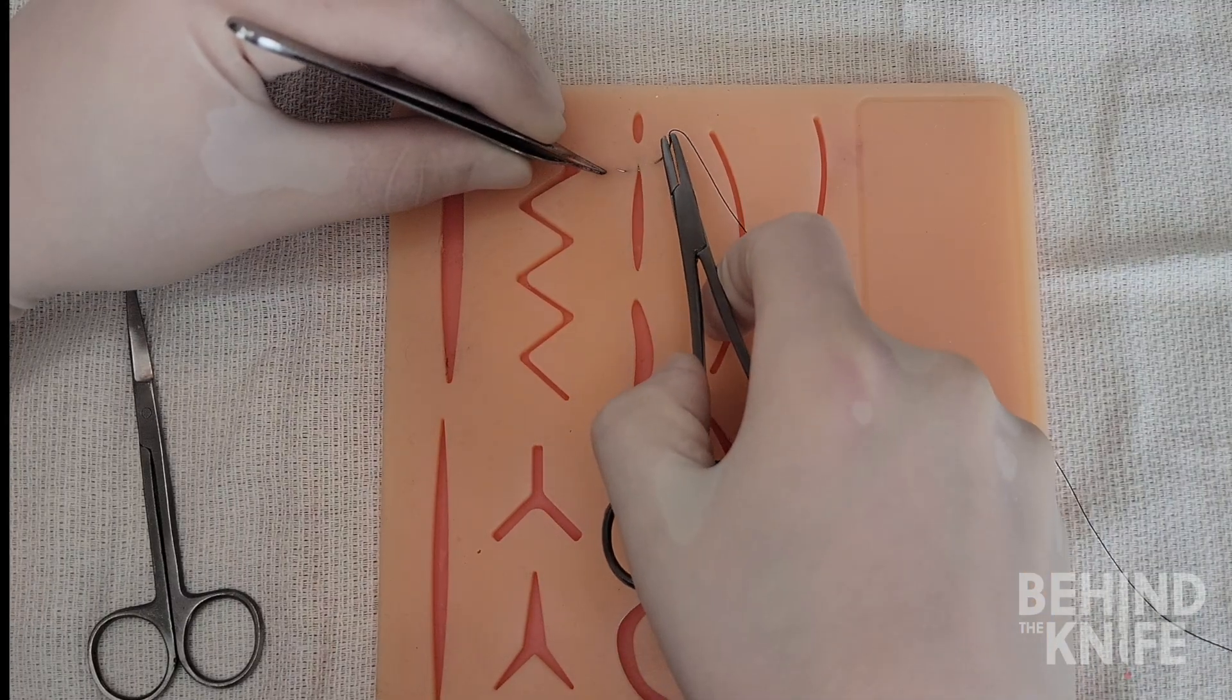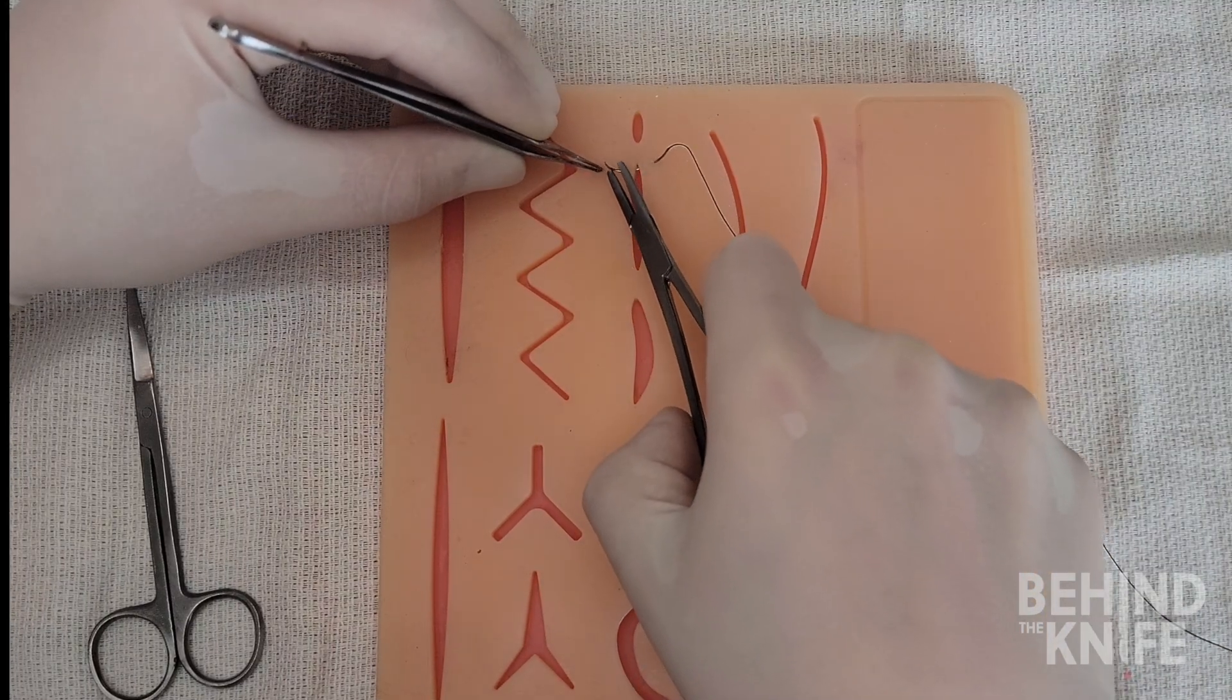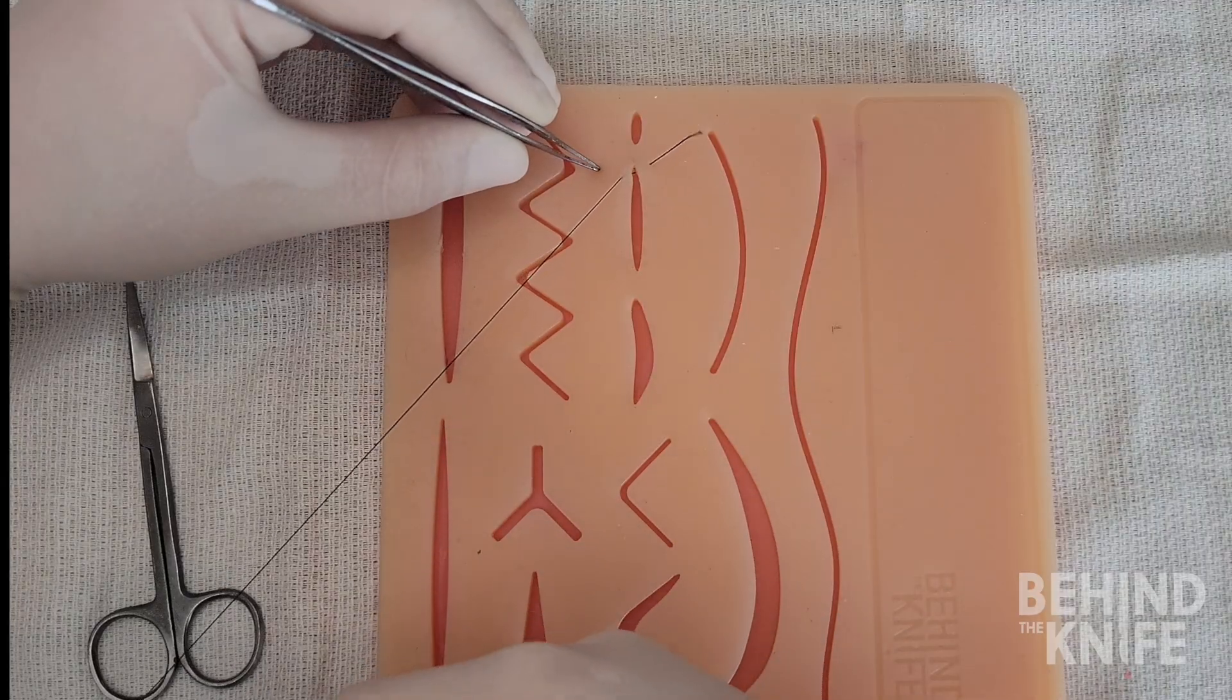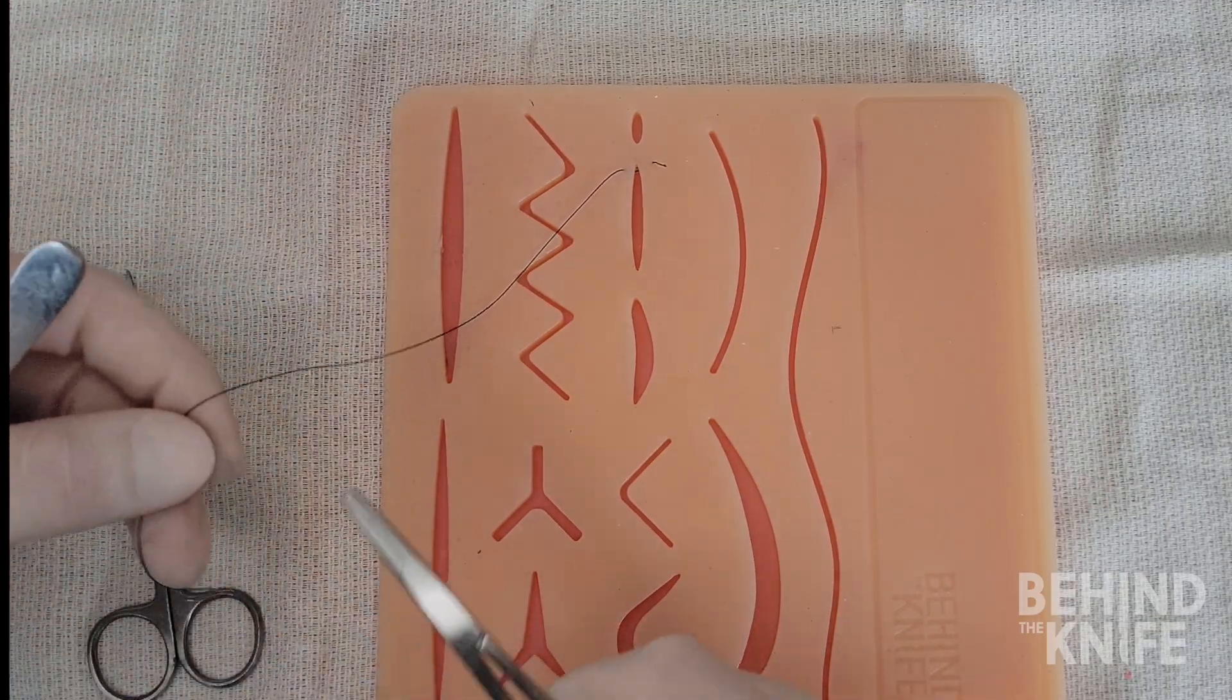The first part of the suture involves placing an anchoring stitch at the top of the wound. To do that we're going to perform a simple interrupted stitch here at the top.